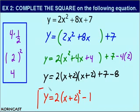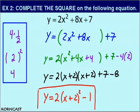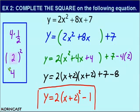Now we have successfully completed the square on this equation. Before we proceed to the next example, I'd like to bring your attention to one last thing. After we multiplied 4 by one half, we got the number 2 inside our parentheses within the completing the square process. Please notice where else we have a 2 within our parentheses. Coincidence? I think not.